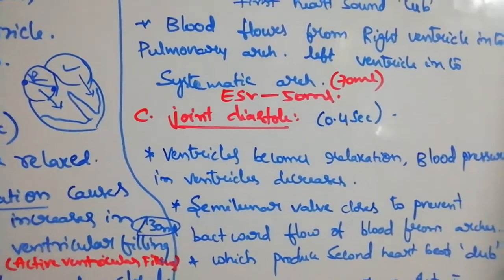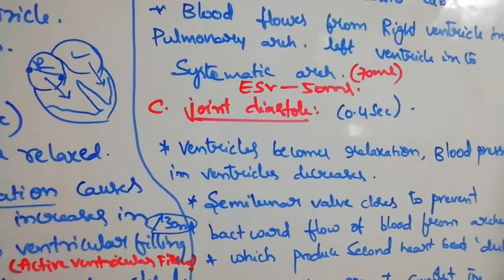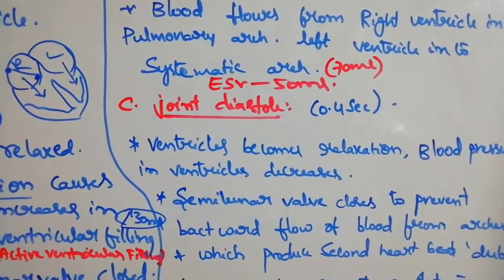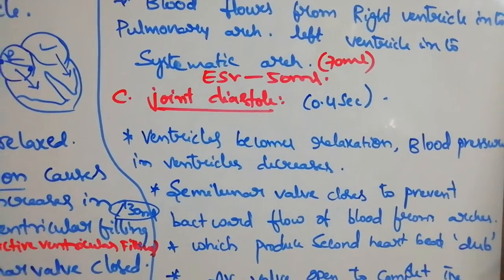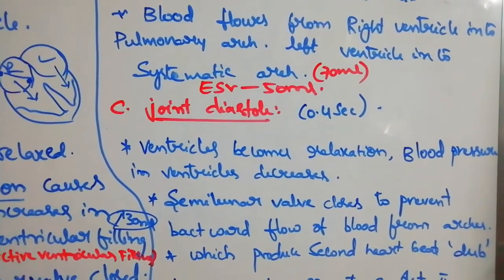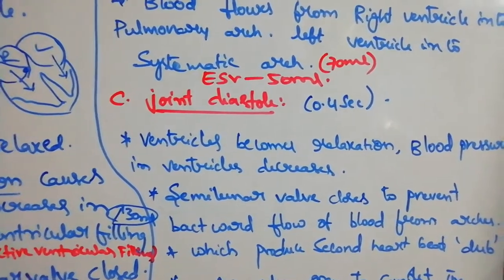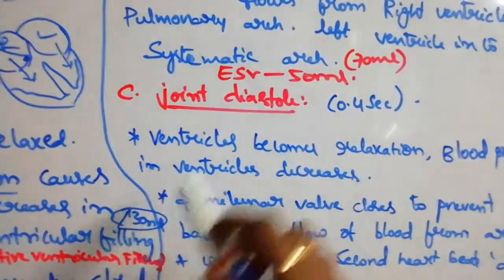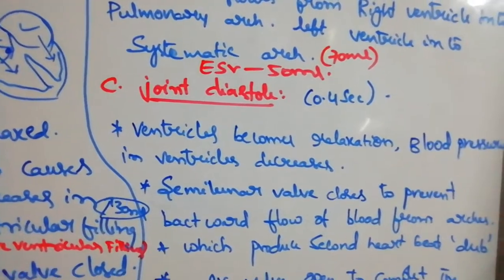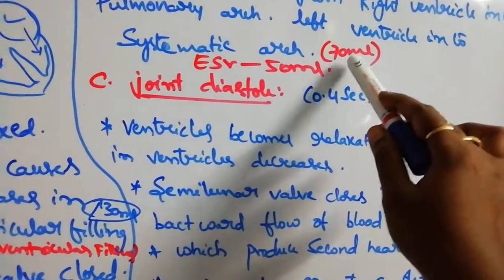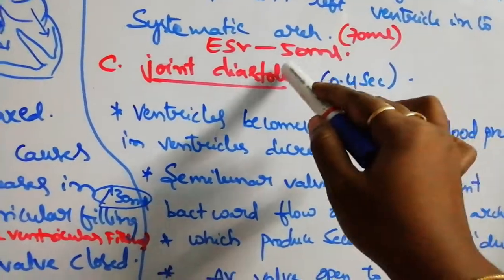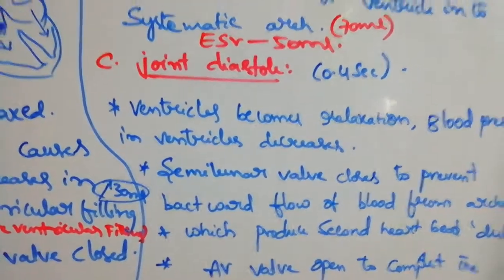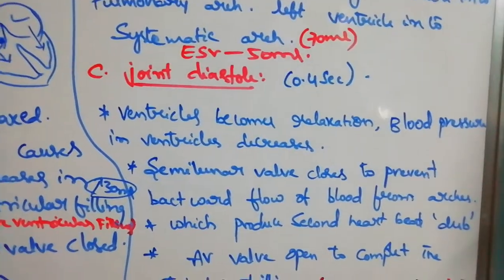The volume of blood entering the arches is 70 ml. The total volume was 130 ml, 70 ml is ejected, and the remaining volume — called the end systolic volume — is approximately 60 ml.